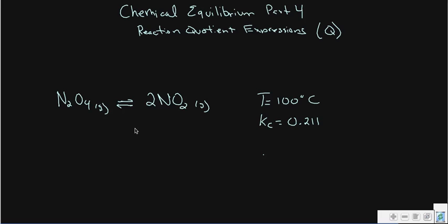So I've set up a little reaction right here with dinitrogen tetroxide that turns into nitrogen dioxide. This is a similar reaction we've been using in earlier discussions.